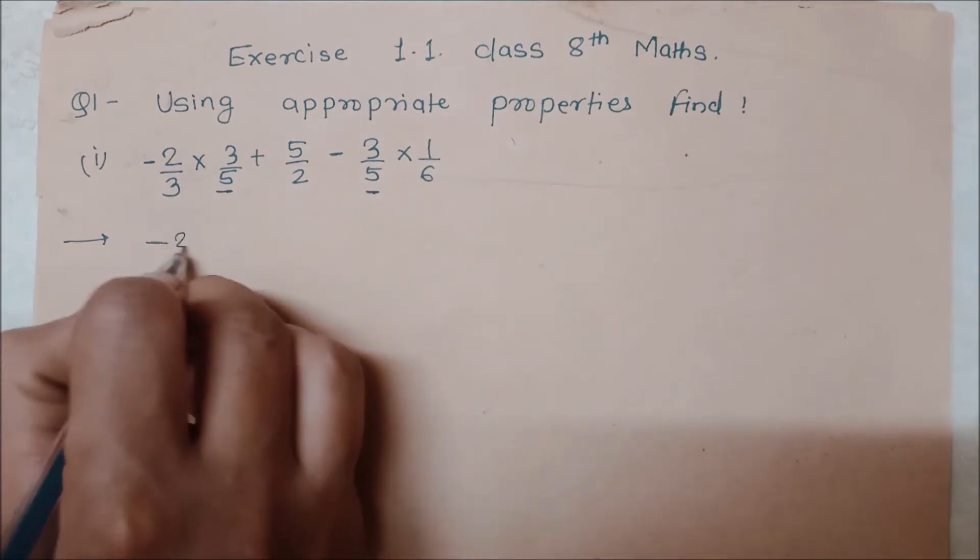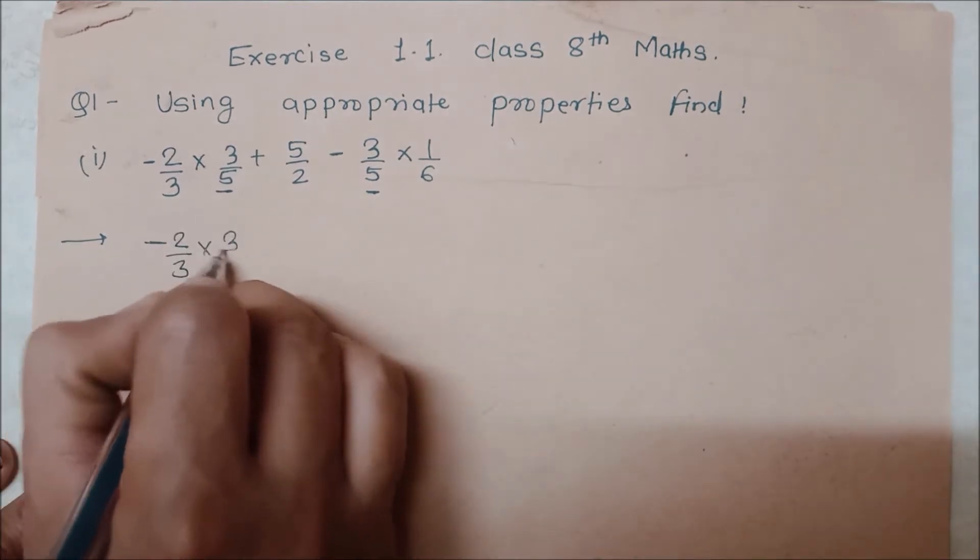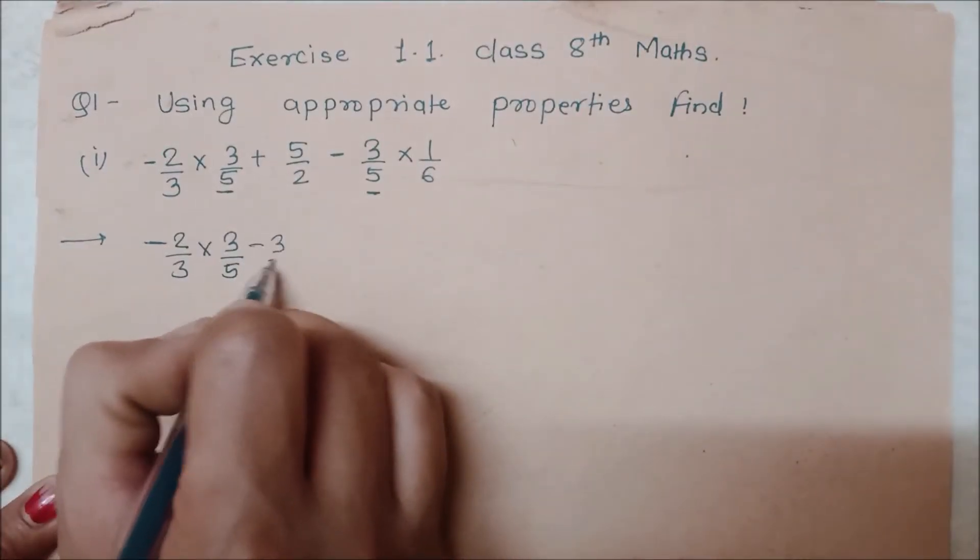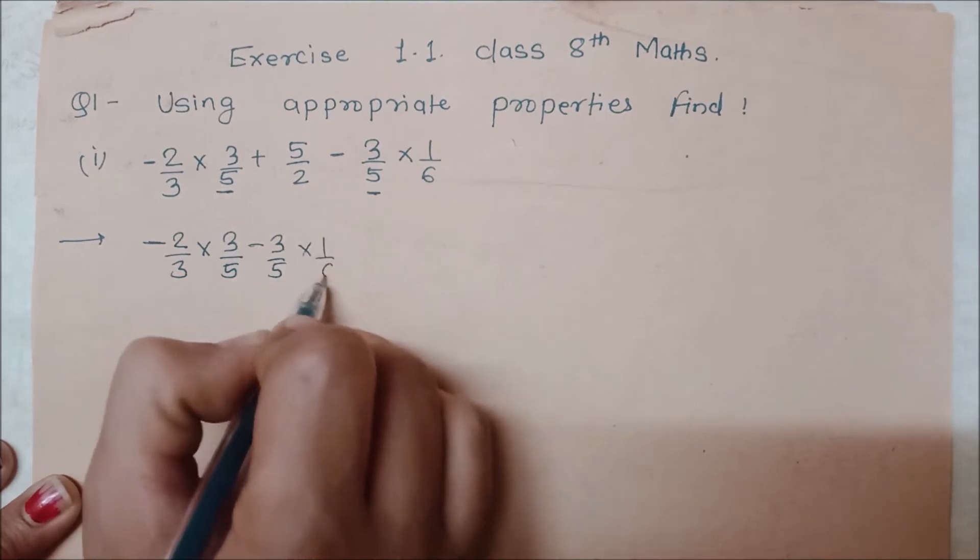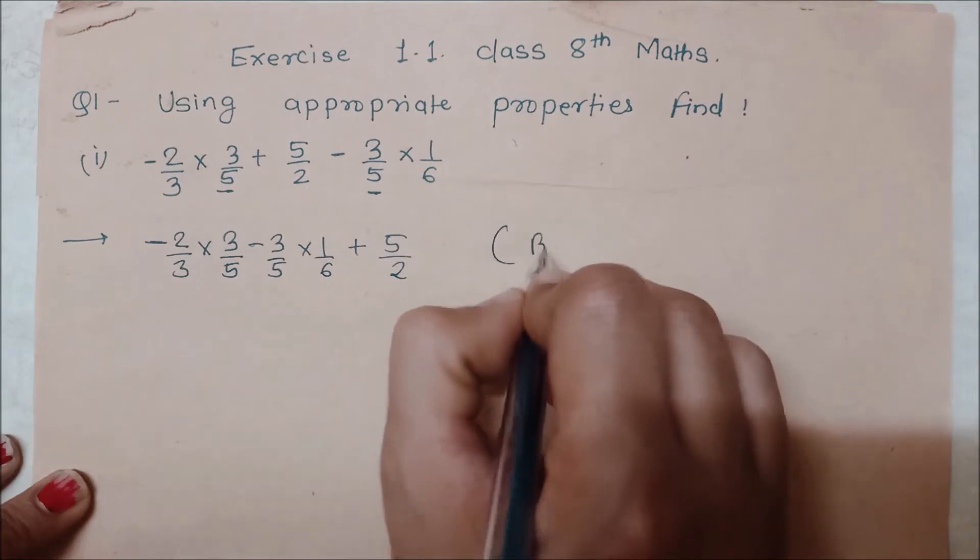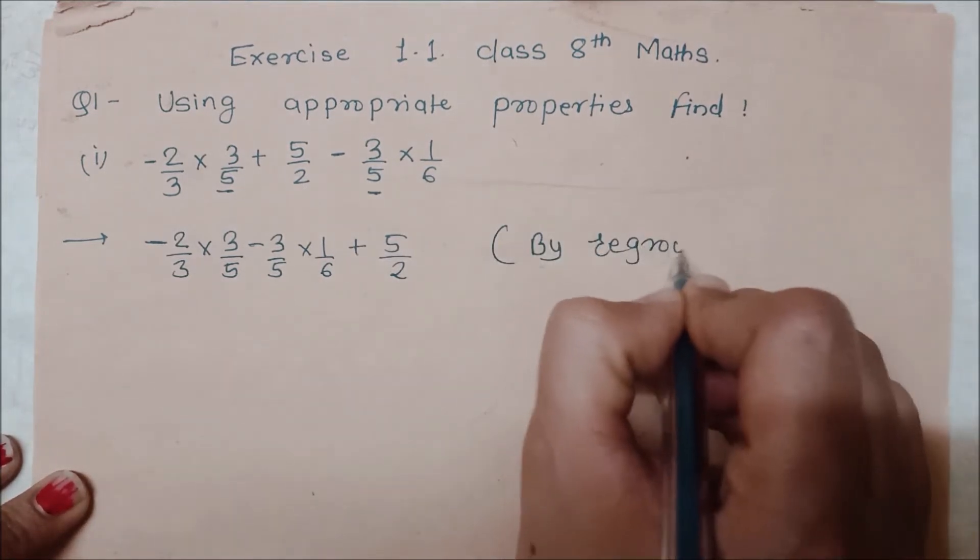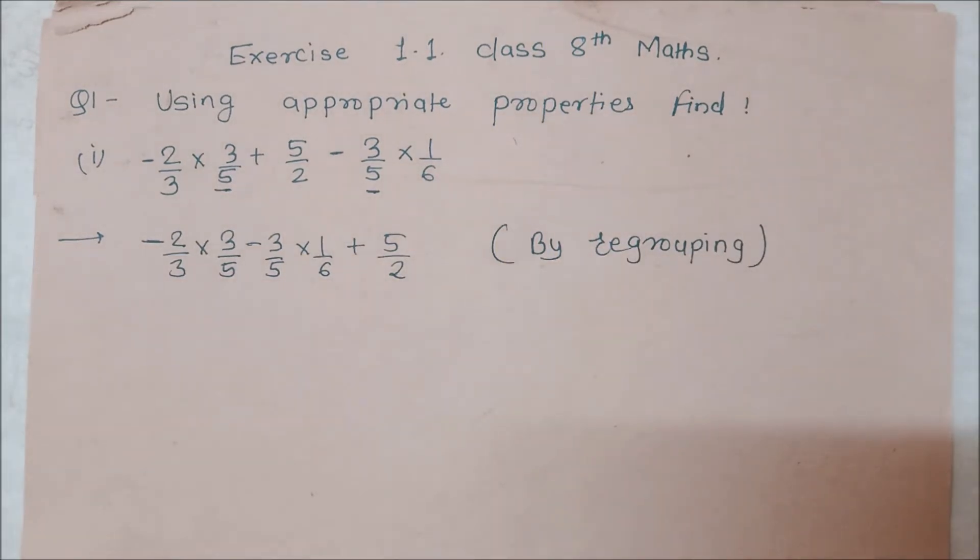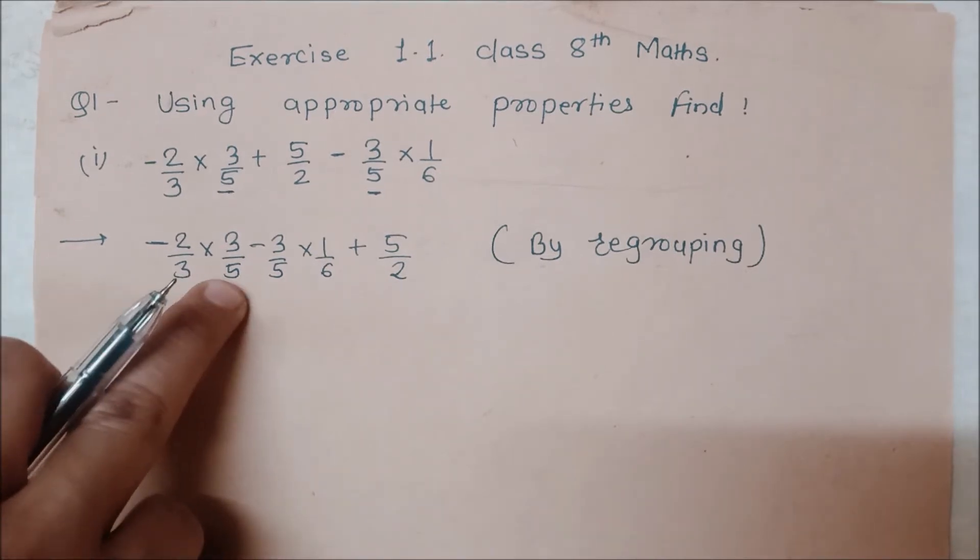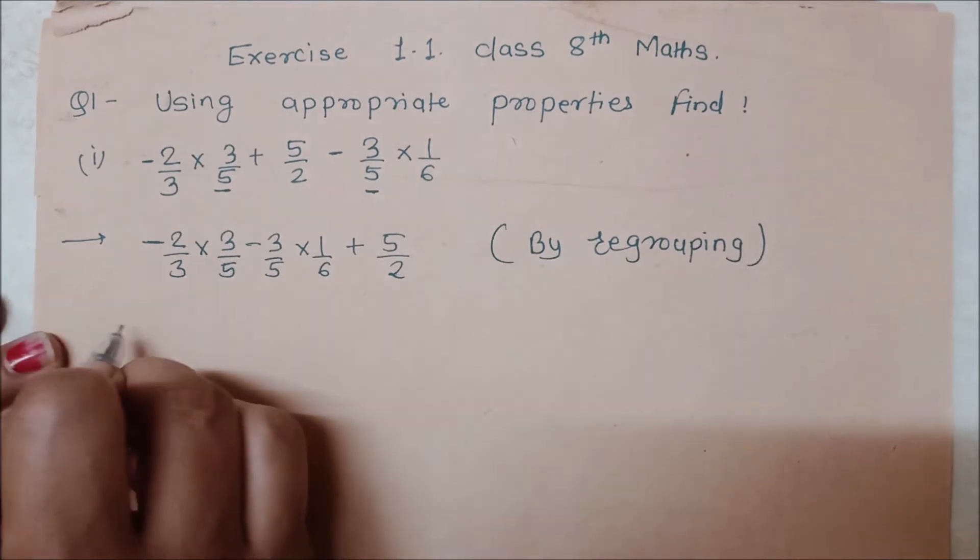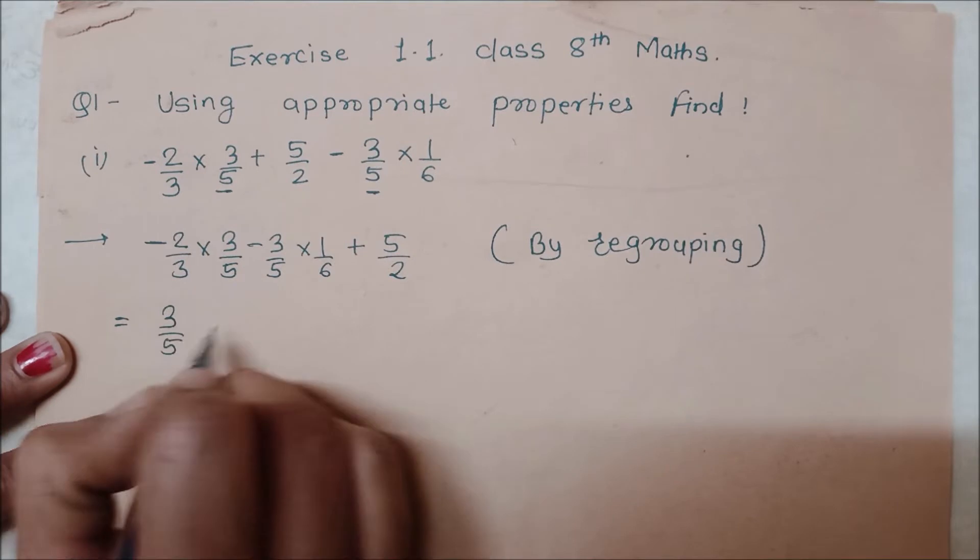First what will happen? Minus 2 upon 3 into 3 upon 5, this is the first term as it is. The second one, we take this: minus 3 upon 5 into 1 by 6. And this we take to the end: plus 5 by 2. We have done this by regrouping, meaning that common terms are together.